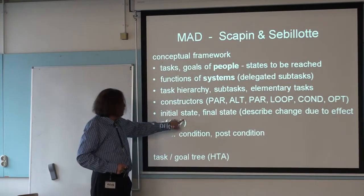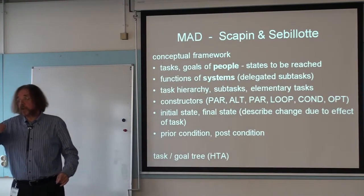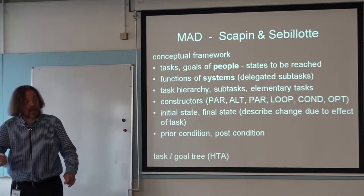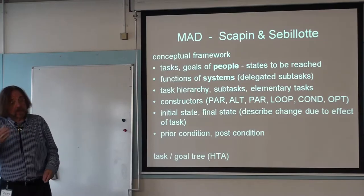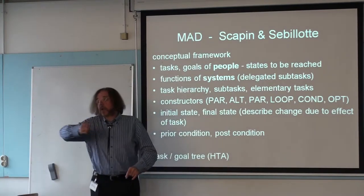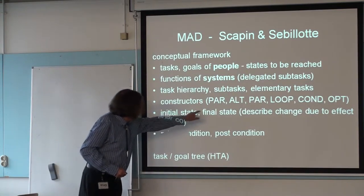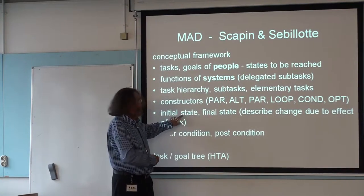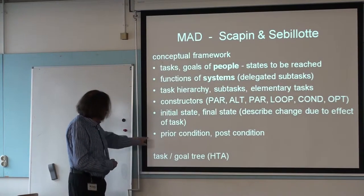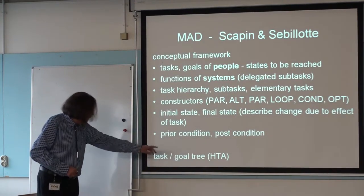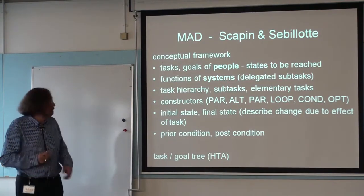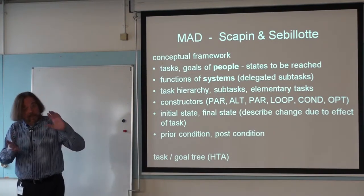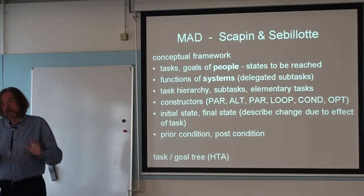Each task has an initial state and a final state. The initial state means you can only start performing the task if a condition is met — most of the time related to objects. For example, if this object is available, or if the zip code is filled in. There's also a final condition: you can stop if a certain state is reached. So there are prior conditions and post-conditions, and a hierarchical tree of tasks and goals. They don't really distinguish between tasks and goals — they treat them as the same thing.